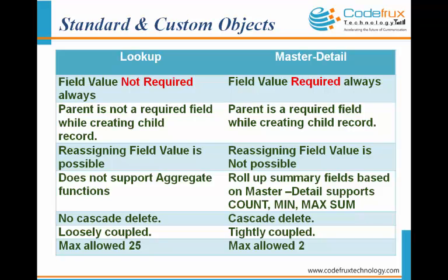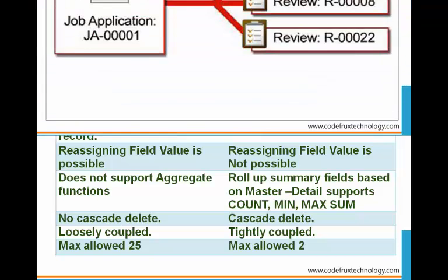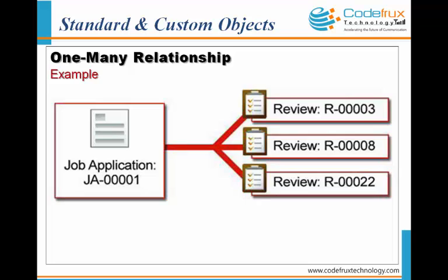The maximum allowed lookup relationships is 25, and the maximum allowed master detail relationships is 2. As an example, we will establish a one-to-many relationship between two custom objects: review and job application. One job application in an HR module will have multiple reviews associated with it, since multiple reviewers may review the same application in multiple interviews.